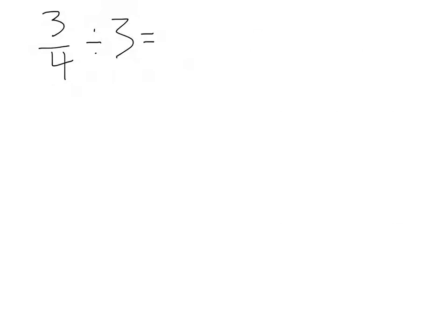So when we're thinking, we're taking 3 fourths and we're dividing it by 3. Well, when I'm dividing something by 3, I know what the total is, right? I know that it's 3 fourths, but I want to actually find out what's 1 third of this?